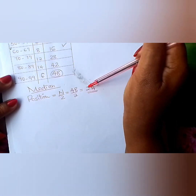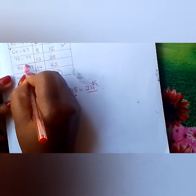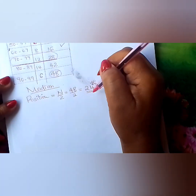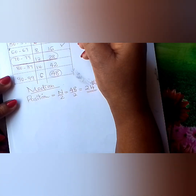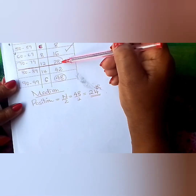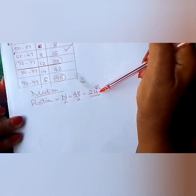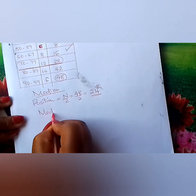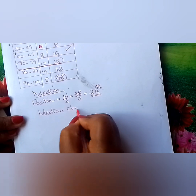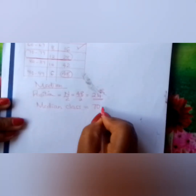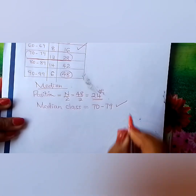So we underline this row — this is the row that will help us find the median. The median class is 70 to 79, because the cumulative frequency first reaches or passes 24 in that row.